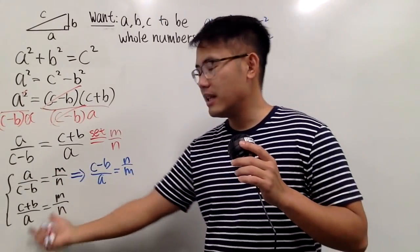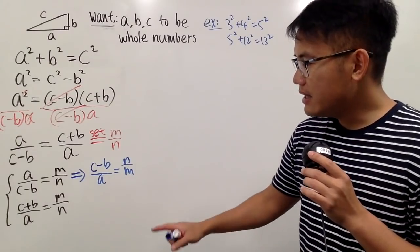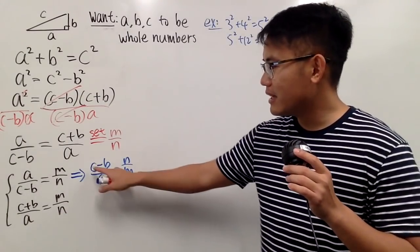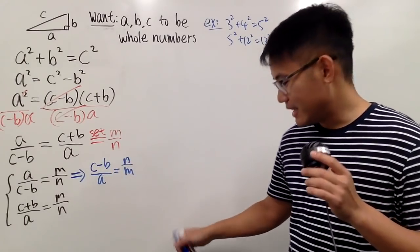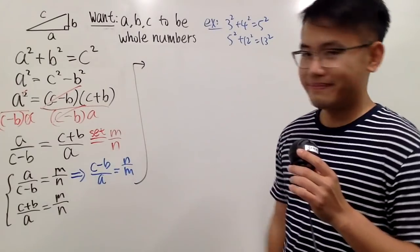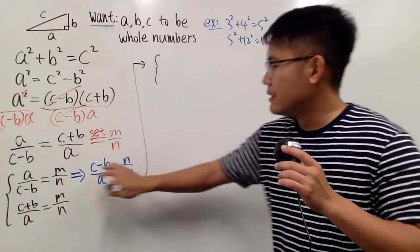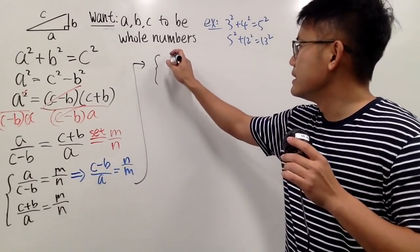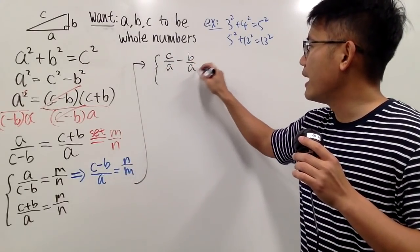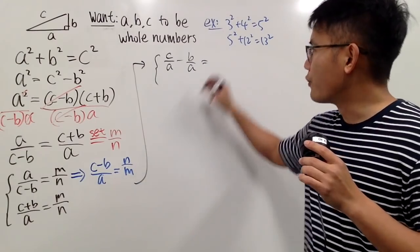And now we'll be working with this and that. And the idea of having A on the denominator is better because then we can split the fractions. So let's go ahead and continue right here. On the top, for the first equation here, we can just do C over A minus B over A, and this is equal to N over M.